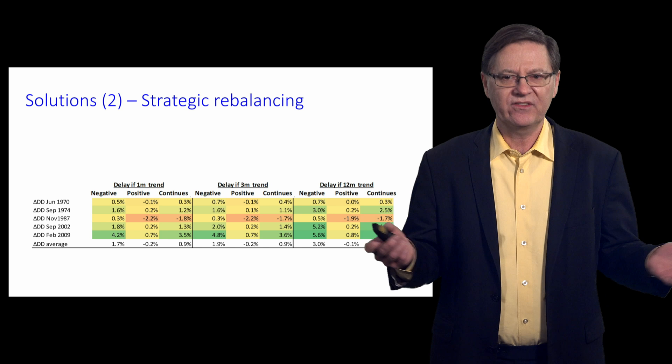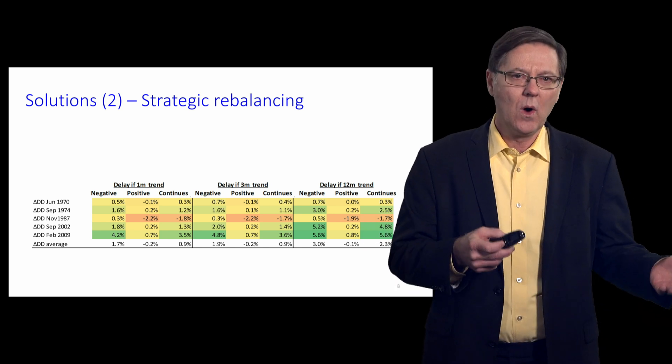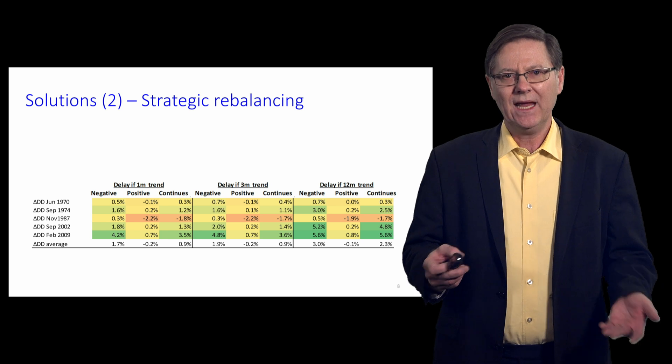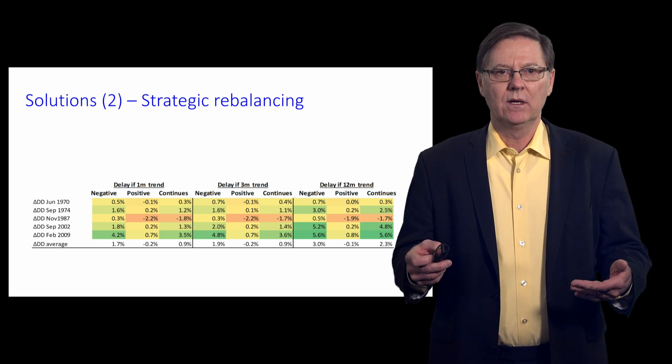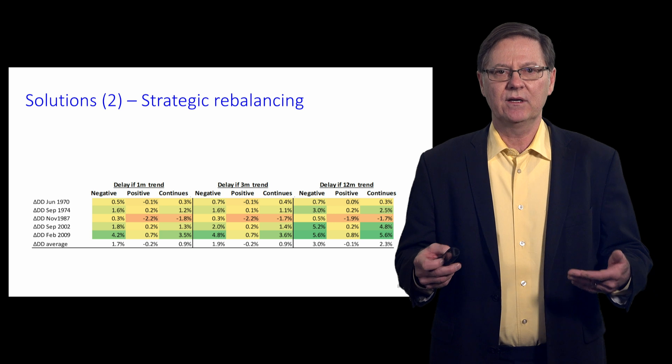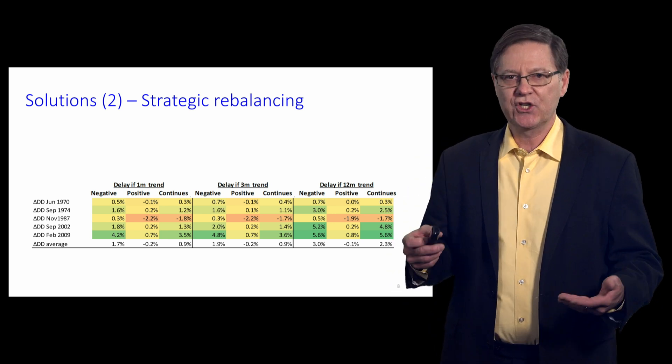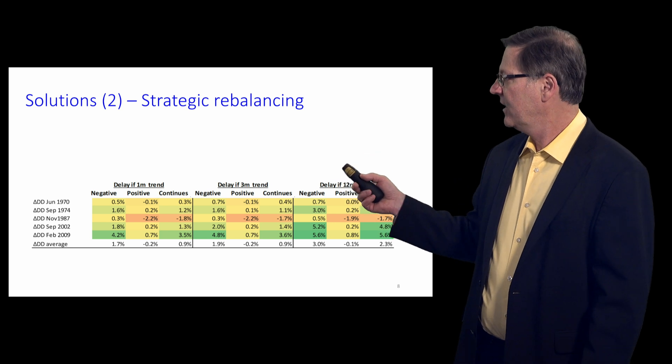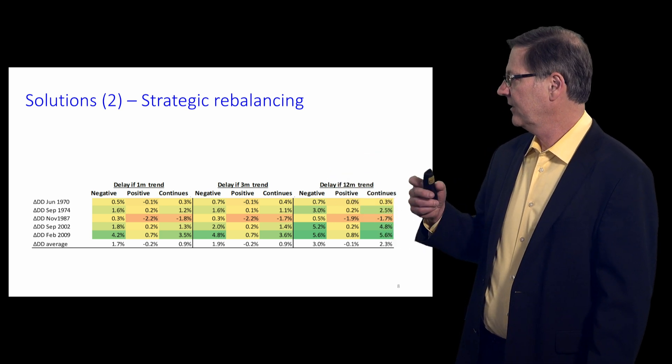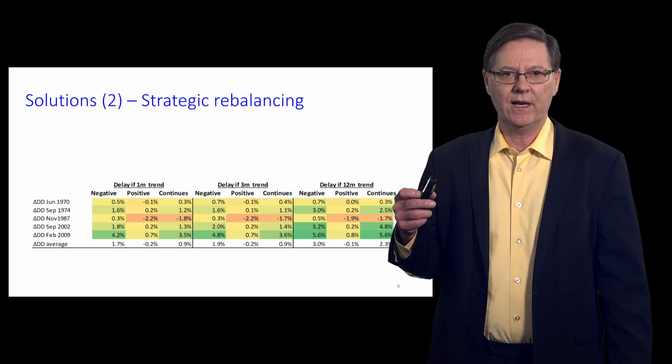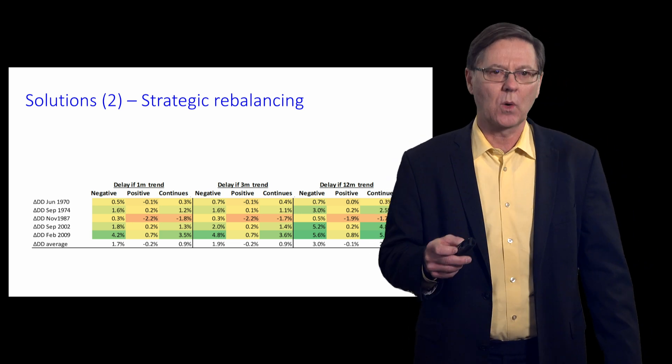Our empirical work looks at many different large drawdowns, and we look at very simple trend-following rules: one-month trend, three-month trend, 12-month trend. You can see that in general, this strategic rebalancing reduces the size of the drawdowns. The reduction you can see in green for the global financial crisis—the reduction is over 5%.